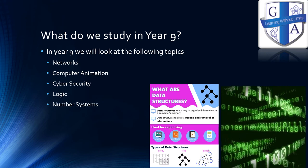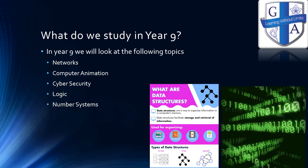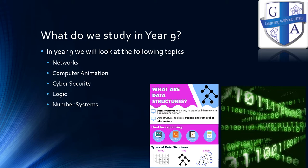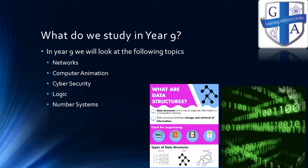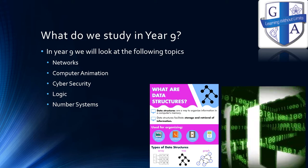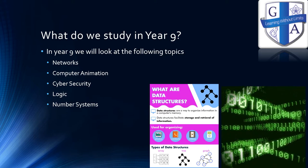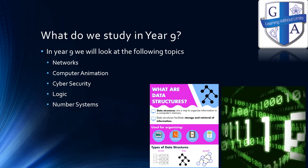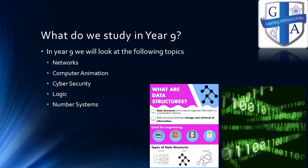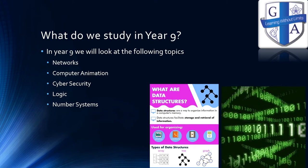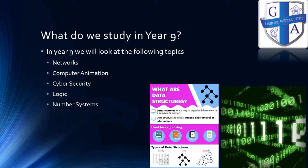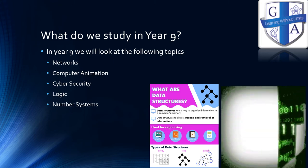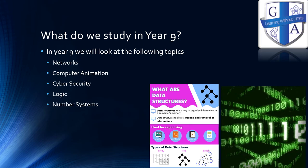In Year 9 we start to go towards some of the more technical topics. We start by looking at networks — how networks are put together, how they work, why networks are important — and this includes everything from the home network to a business network all the way up to the internet. We then look at computer animation and how you can use computers to animate. We look at cyber security, how to make sure people are safe online, and some of the potential threats people would face when they use computers. We also look at logic and number systems and show how students can use computer logic to help solve problems.